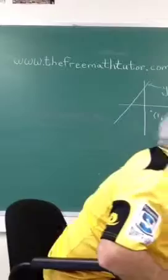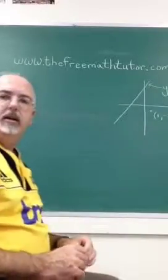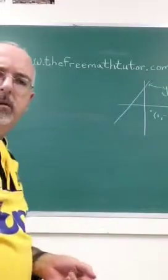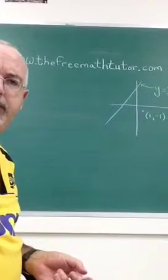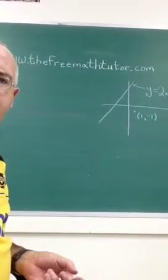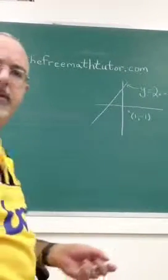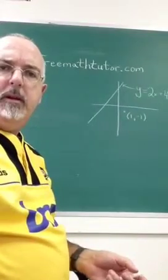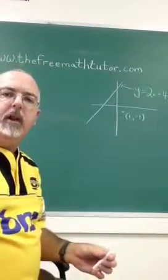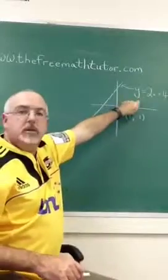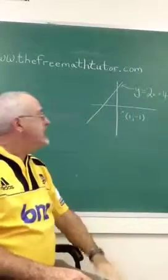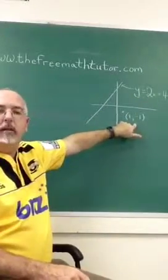Okay, hello, this is the Free Math Tutor. This broadcast is going to show you how to find the equation of a line that is parallel to this line, y equals 2x plus 4, and passes through this point (1, -1).